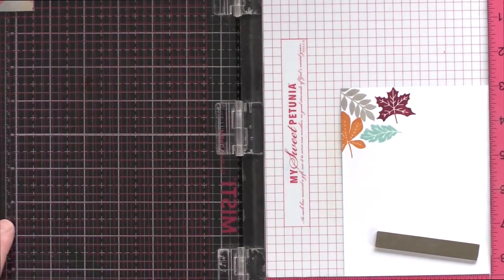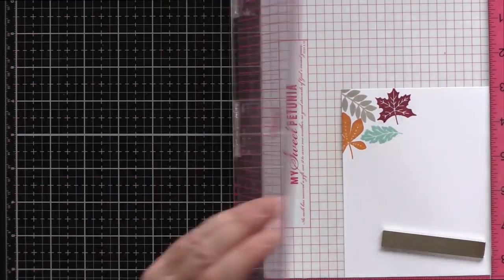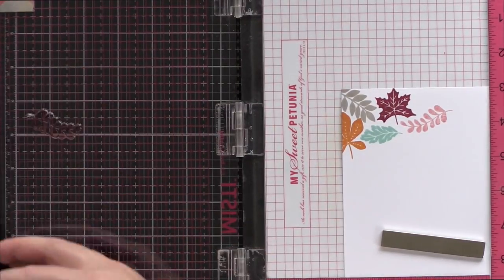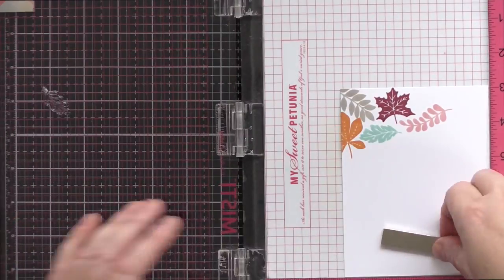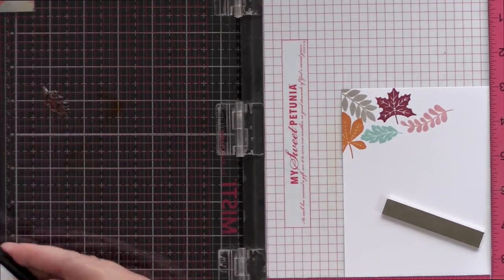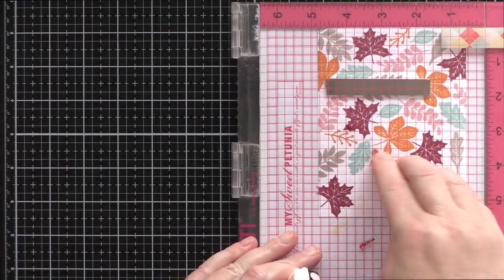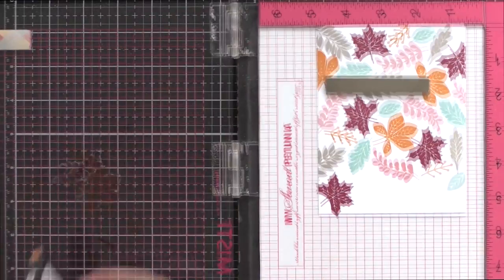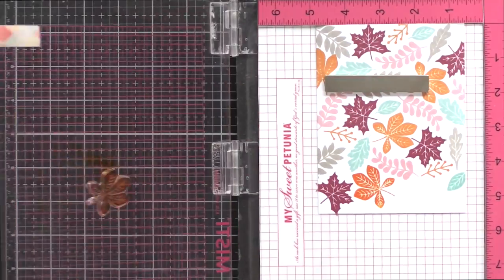With dye inks you do have to be careful though with the fine details of the veins and some of the leaf images. One of the properties of dye inks which gives such lovely results is that it soaks into the card, smooths out and softens as it dries. However, this also means that the fine details can be lost.